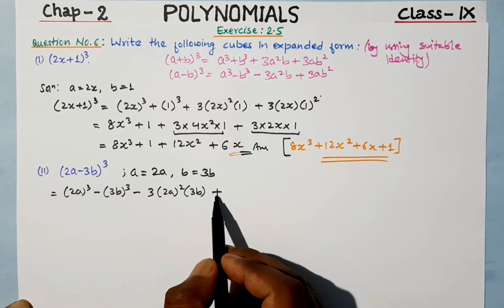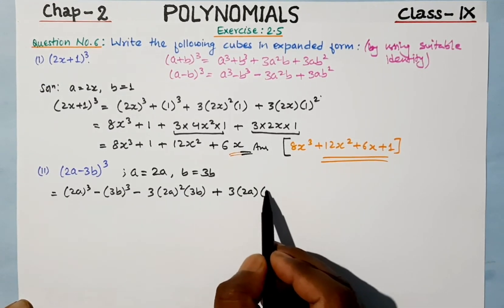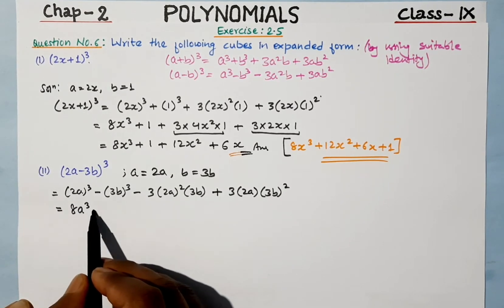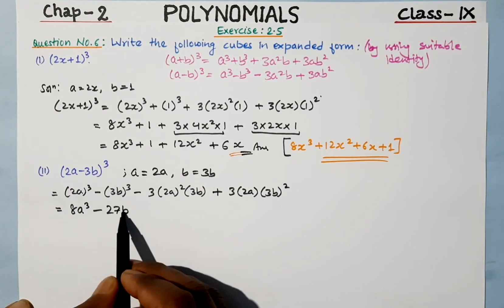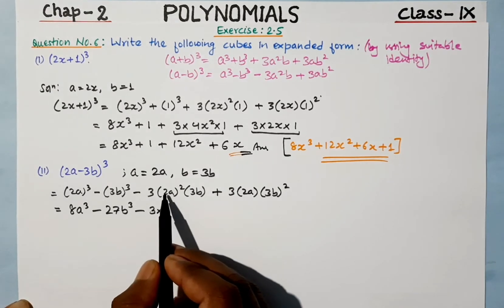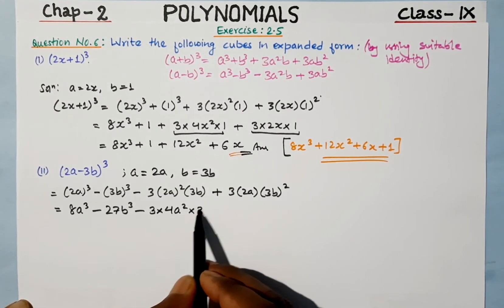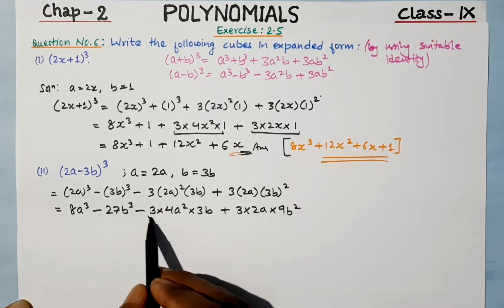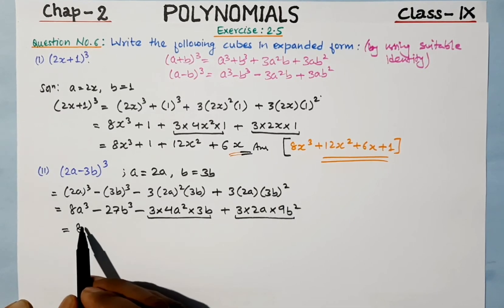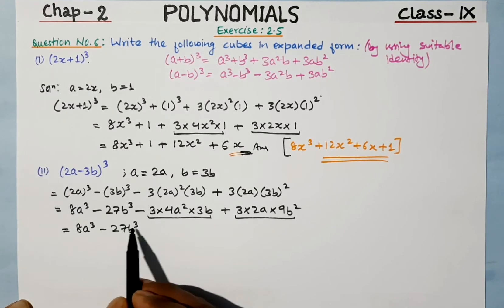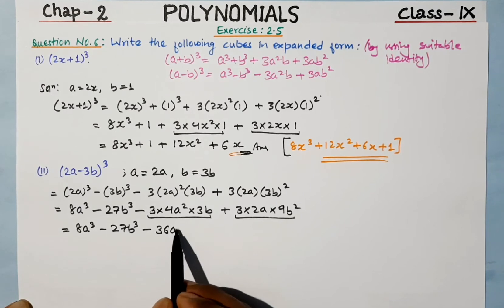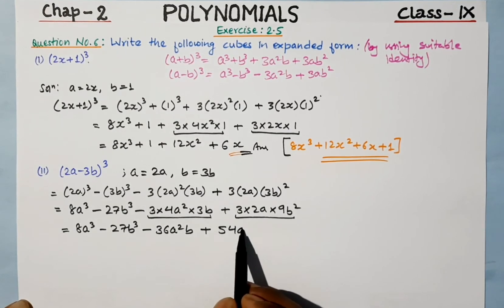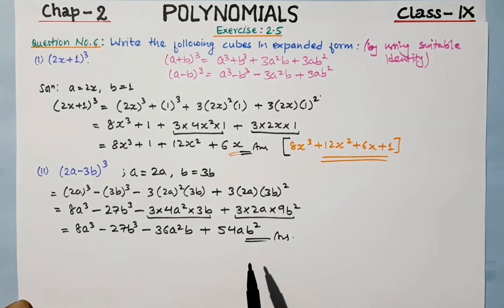Expanding: a cube is 2a cube which is 8a cube, minus b cube is 3b cube which is 27b cube. Then minus 3a squared b: 3 into 2 squared is 4, so 3 into 4a squared into 3b gives 36a squared b. Plus 3ab squared: 3 into 2a into 9b squared gives 54ab squared. So the final answer is 8a cube minus 27b cube minus 36a squared b plus 54ab squared.